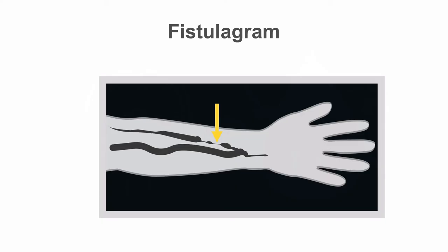A fistulagram is an x-ray procedure to look at the blood flow and check for blood clots or other blockages in the fistula. Contrast dye is used so the blood flow can be seen on x-ray. A fistulagram can be diagnostic and therapeutic since you can perform angioplasty, stent placement, or thrombectomy during the procedure once the cause for the access dysfunction is diagnosed.